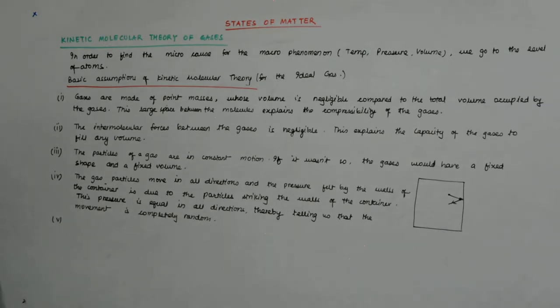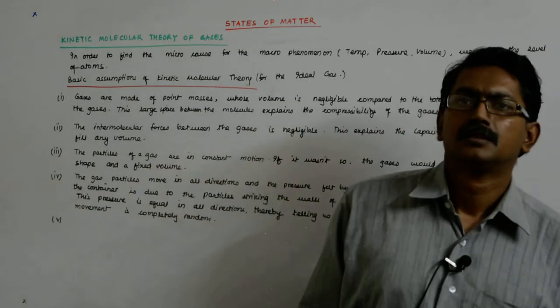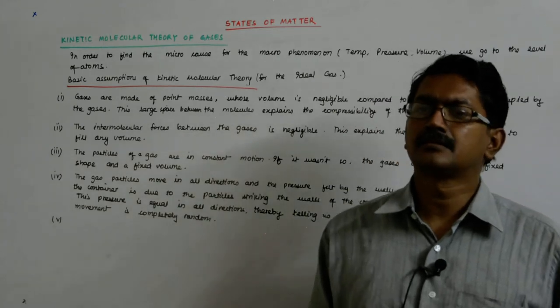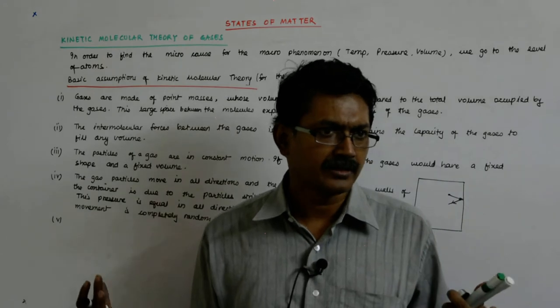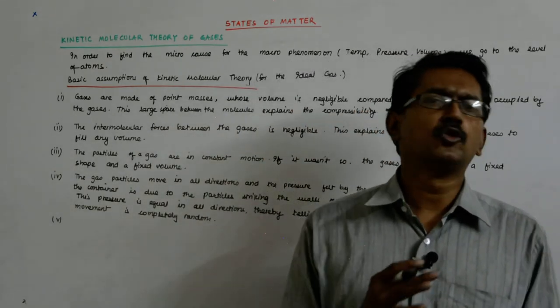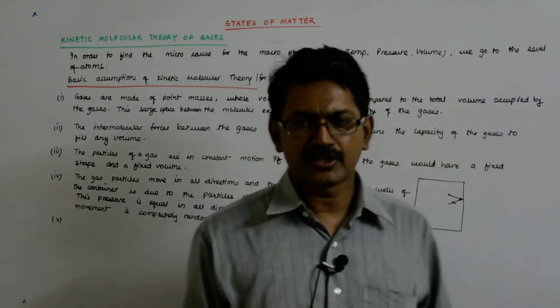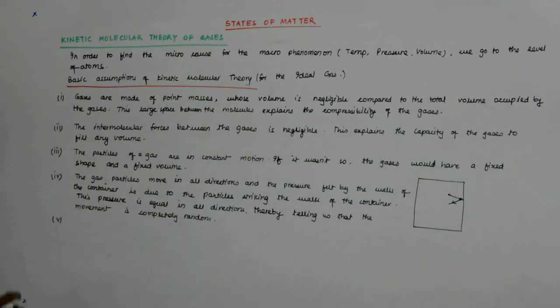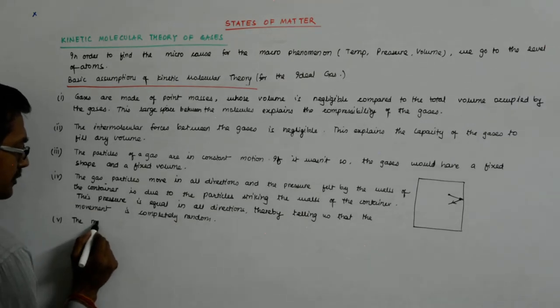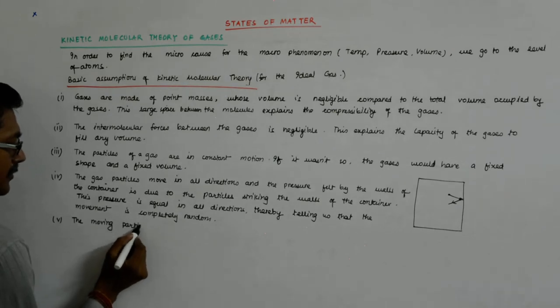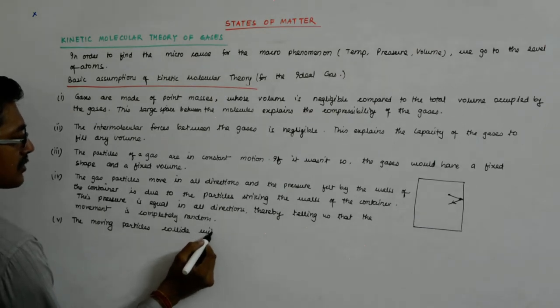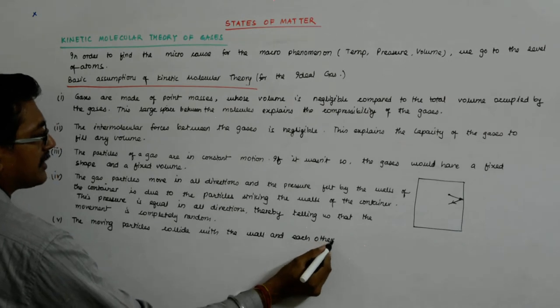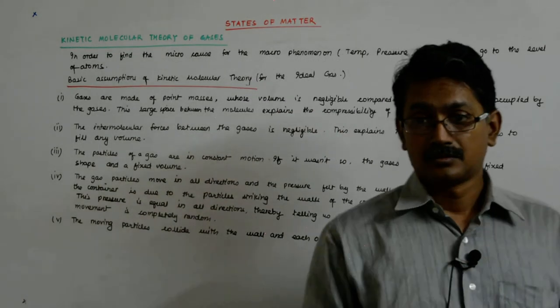Since there are a huge number of particles—say 16 grams of oxygen has an Avogadro number of particles—though they are very far away and moving in random directions, and the spaces are large compared to their sizes, still they are bound to collide with each other and with the walls. The moving particles collide with the wall and each other.